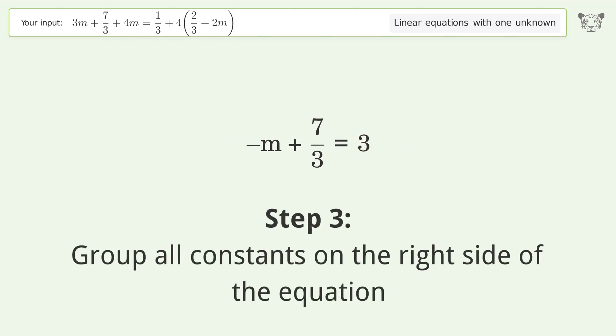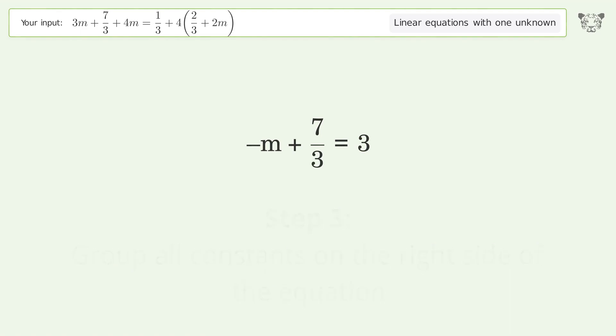Group all constants on the right side of the equation. Subtract 7 over 3 from both sides. Combine the fractions. Combine the numerators.